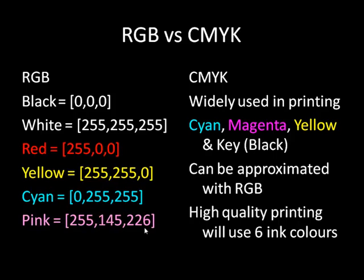CMYK is a colour system widely used in printing, standing for cyan, magenta, yellow, and key — which is usually black. A black ink is used because it's hard to get a pure black by mixing the different colours of ink. We can approximate the different colours from an RGB system by mapping between them, so what you get when you print from your computer hopefully matches what's on screen. High-quality printing systems often use six ink colours to allow better mixtures.